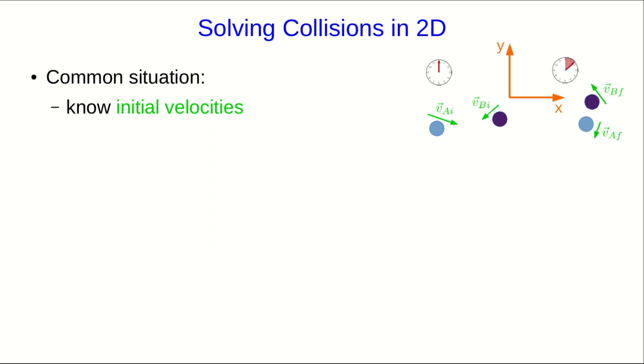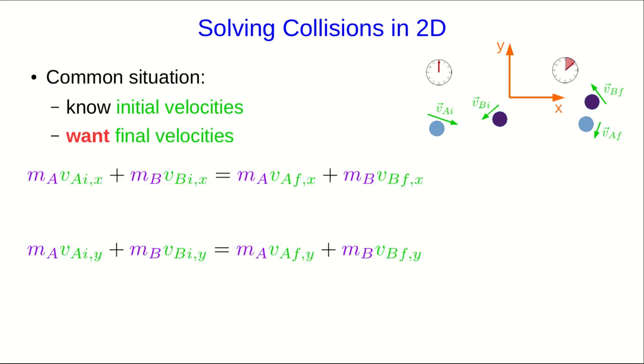Let's look at a common situation, where you know the initial velocities, and you want the final velocities of both objects. Then, here are your conservation of momentum equations, which we just saw before. And I'll note that before you do anything, you should probably count unknowns.